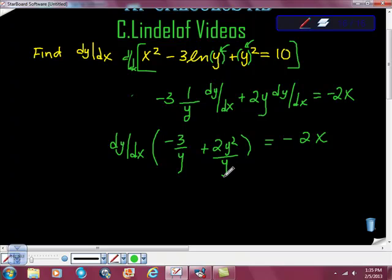Now I can add these terms together. So I get dy/dx times (2y² - 3) all over y. This equals -2x.